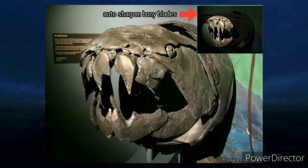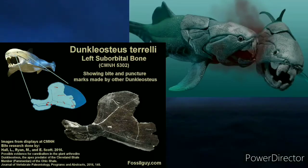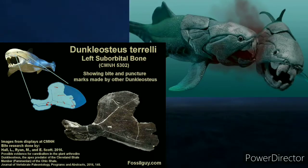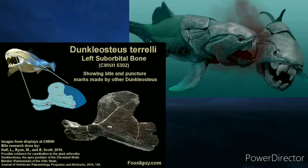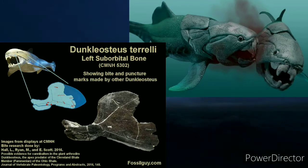The bony plates acting as teeth — called fangs by scientists — sharpened themselves with every opening and closing of the mouth, scraping against each other in the process. Dunkleosteus is believed to have been cannibalistic: injury marks found on certain fossils indicate they inflicted injuries on their own kind, attacking each other for food or territory control.